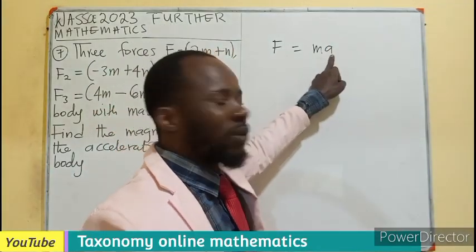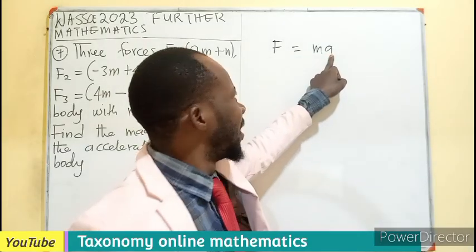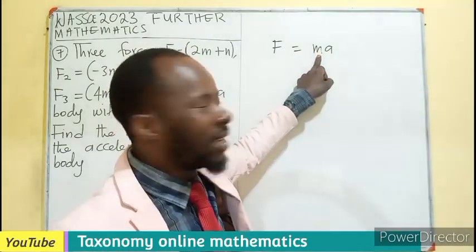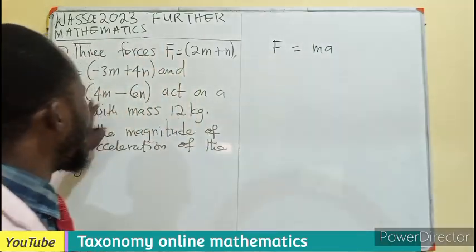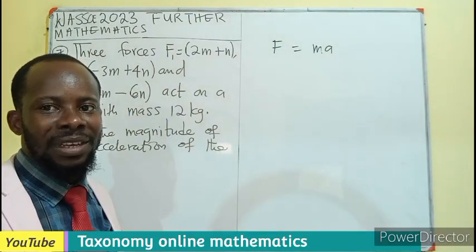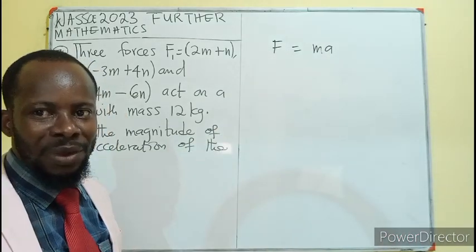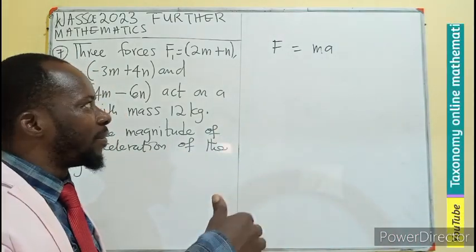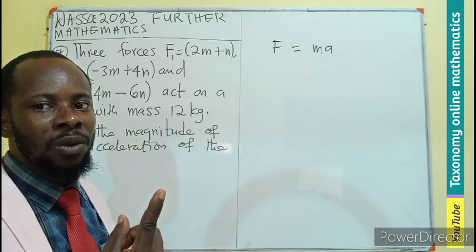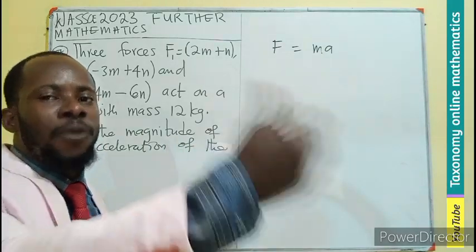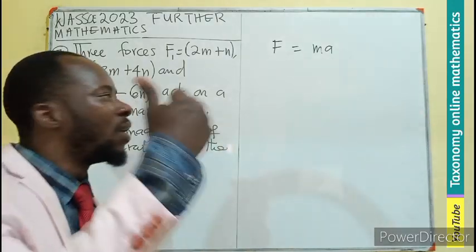So if I want to find the acceleration, I need the mass of the body, I also need the force at which it's working. But in this case, which force am I going to use? There are three forces and only one mass. We can't find the acceleration of all the forces because you have only one mass.